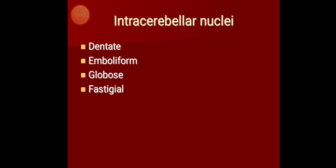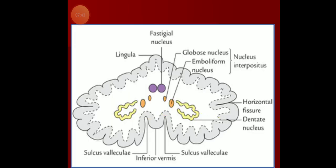To recap: gray matter has two parts — the outer cerebellar cortex with three layers (molecular, Purkinje cell, and granular), and the intracerebellar nuclei within the core of white matter. The intracerebellar nuclei are four in number. From lateral to medial, they are: dentate, emboliform, globose, and fastigial. Looking at the figure, the dentate nucleus is the first, followed by emboliform, then globose, and finally fastigial.